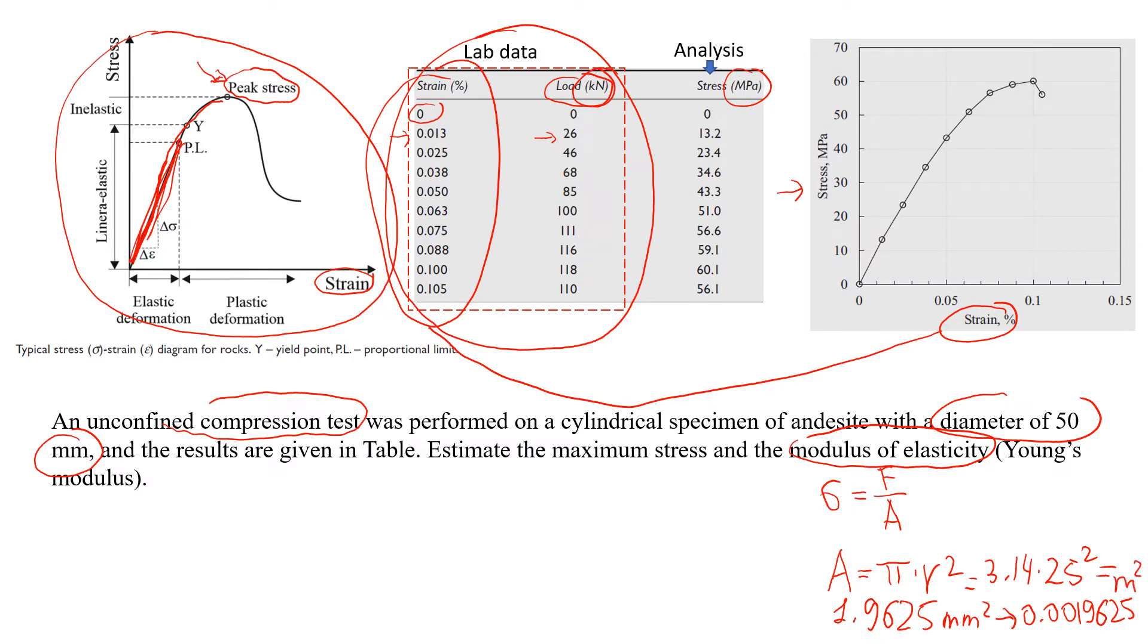So now we know the area in meters and we know the load. For example, for this point we can estimate the stress. Stress will be 26 kilonewtons divided by the area, and the area is going to be the same because we don't change the diameter of the rock when we test it, 0.001965. That will give us approximately 13 MPa, so this point.